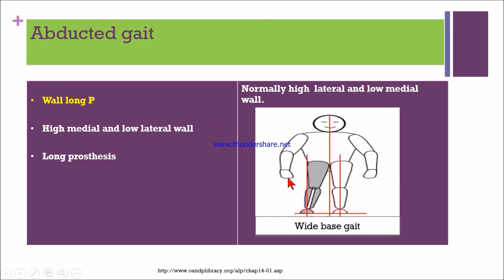Next is abducted gait in transfemoral gait deviation. In abducted gait, there is a wide-based gait. Normally the lateral wall is high and medial wall is low in prosthetic patients. However, when the patient has abducted gait, they have a high medial wall and low lateral wall. The mnemonic to remember this is 'wall long P'.